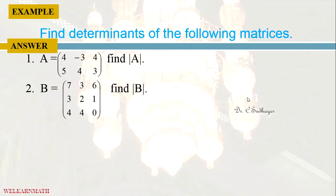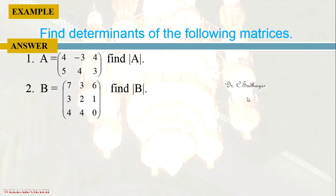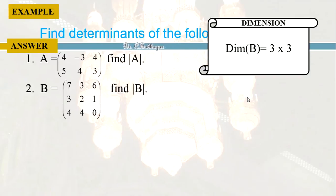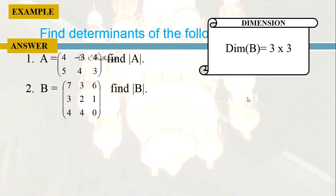Now let us take another problem. Take matrix B equal to [7, 3, 6; 3, 2, 1; 4, 4, 0]. Find the determinant of B. The dimension of B is 3×3, so it is a square matrix and it is possible to find the determinant value. Let us open an Excel sheet to find the determinant.